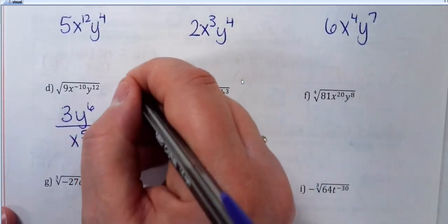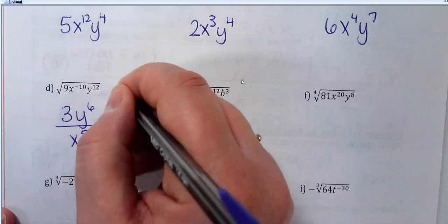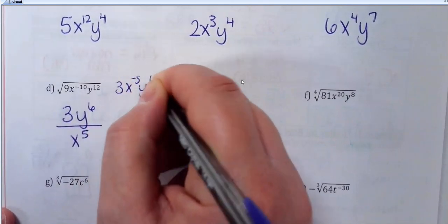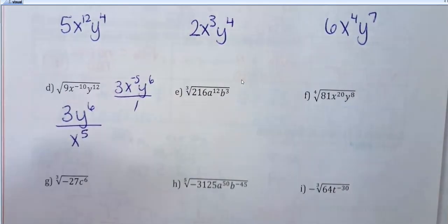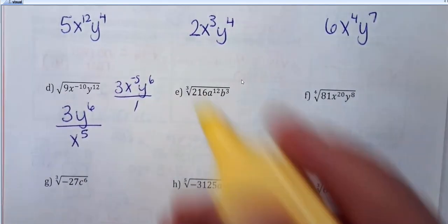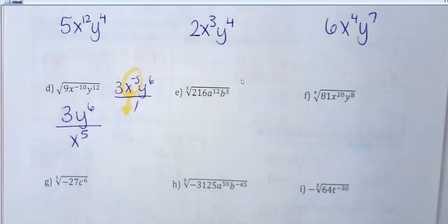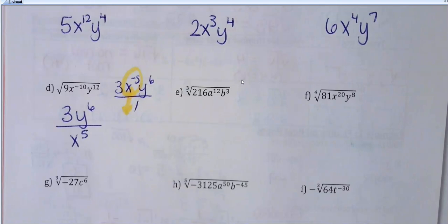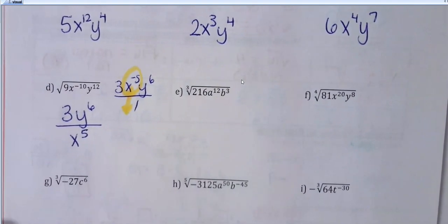If you're wondering how I got that: you would have 3, x to the negative 5th, y to the 6th — then turn it into a fraction and move that negative exponent down. If you need to write that step out, that's totally fine. If you want to just do it without writing it, that's also fine. But just know if you have a negative exponent in your answer, it's not considered simplified — you want to move it to the bottom of a fraction.